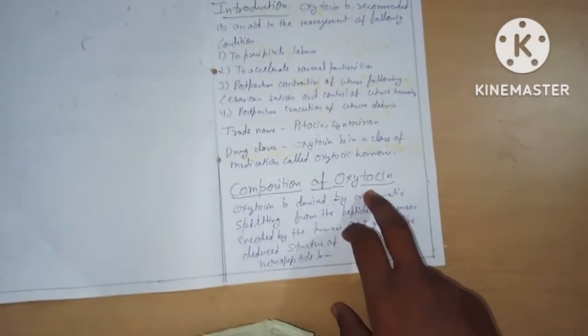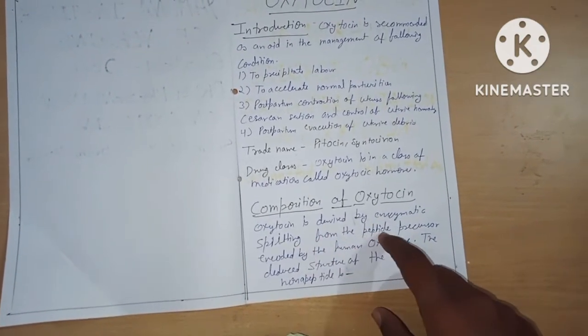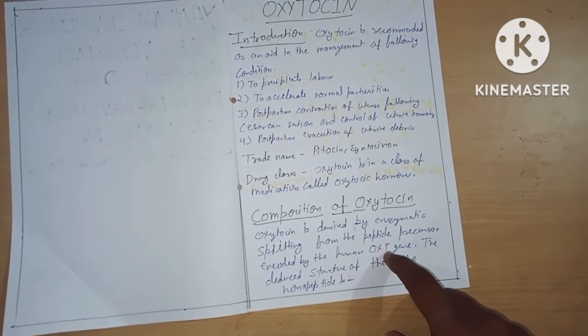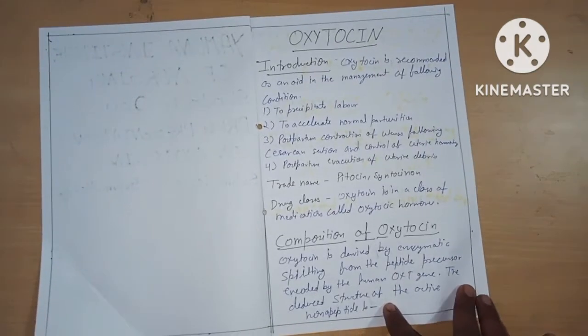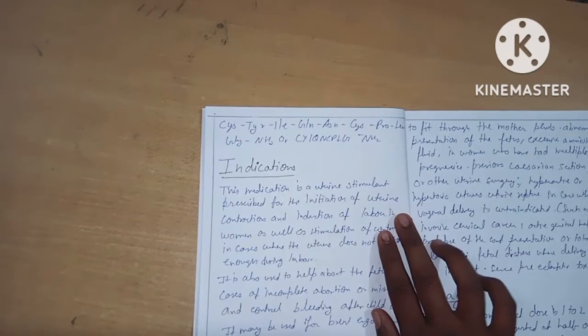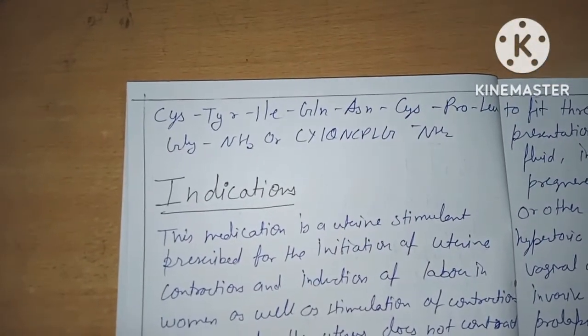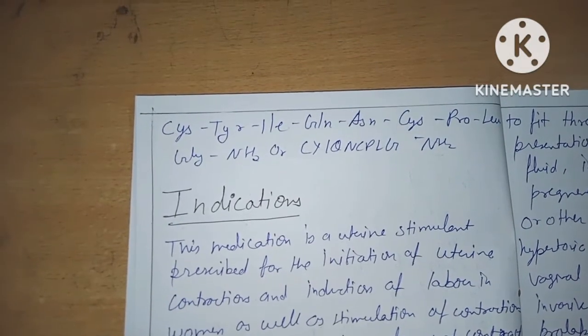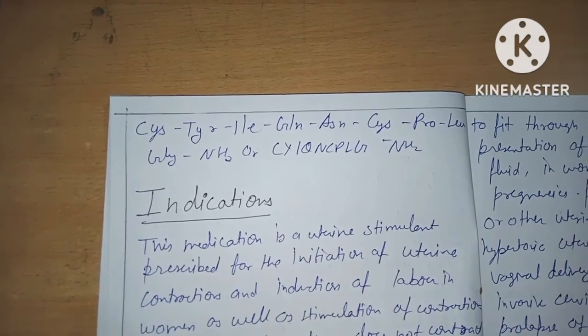The second section is the composition of oxytocin. Oxytocin is derived by enzymatic splitting from the peptide precursor encoded by the human oxytocin gene. The deduced structure of the active nonapeptide is CYS-TYR-ILE-GLN-ASN-CYS-PRO-LEU-GLY-NH2, also written as CPLG.